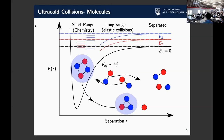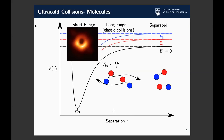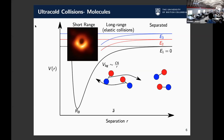The simplest way to understand the rate at which this occurs is to assume the worst-case scenario: there are so many channels in the short-range region of the potential that any part of the wave function that enters there just disappears into another state — like a black hole, whatever goes in can't come out. In that case, it's very simple to calculate. You're going to be losing molecules at a rate that's basically related to the C6.